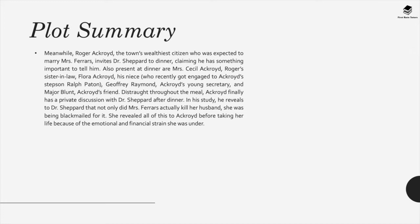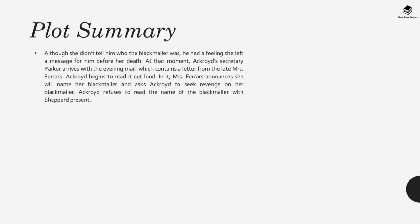In his study, he reveals to Dr. Shepard that not only did Mrs. Ferrars actually kill her husband, she was being blackmailed for it. She revealed all of this to Ackroyd before taking her life because of the emotional and financial strain she was under. Although she didn't tell him who the blackmailer was, he had a feeling she left a message for him before her death. At that moment, Ackroyd's secretary Parker arrives with the evening mail, which contains a letter from the late Mrs. Ferrars.